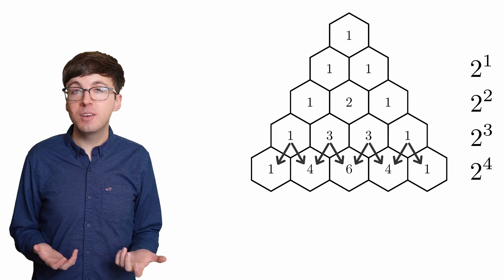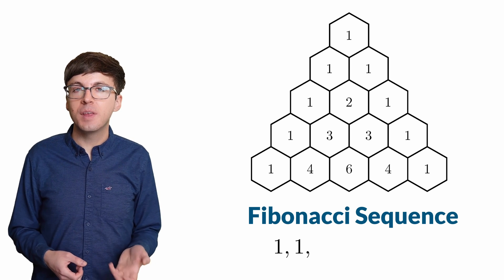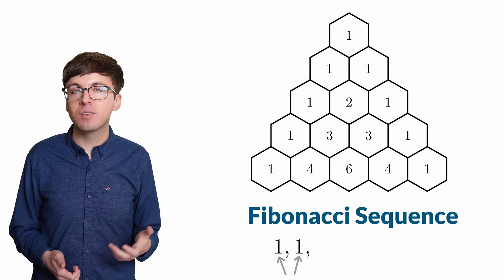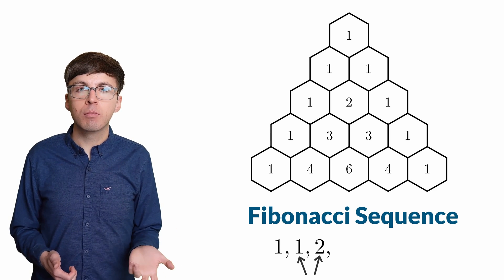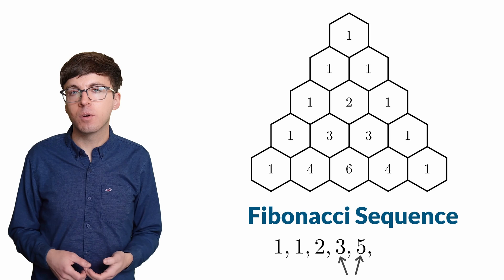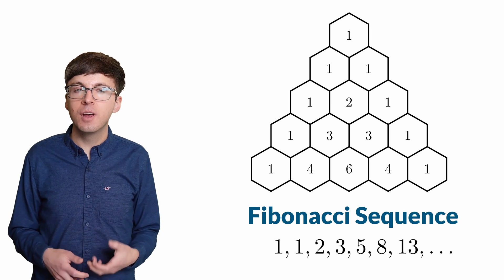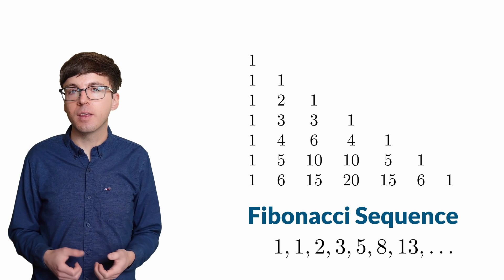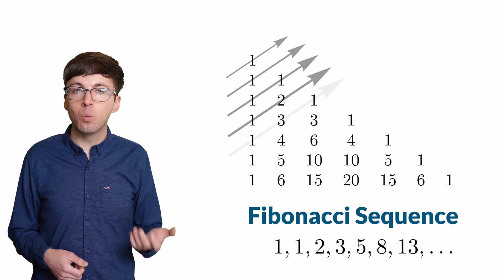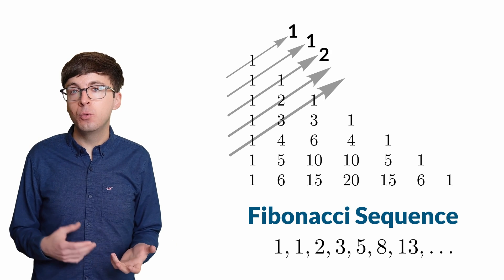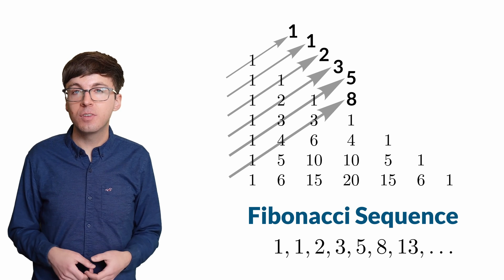The Fibonacci sequence also shows up. This is the famous sequence that starts with 1, 1, and then each following value is the sum of the previous two: 2, 3, 5, and so on. It's a little easier to see in Pascal's triangle if we left-align its values. Now we add up the values along the diagonals. We get 1, 1, 2, 3, 5, 8, and so on — it's the Fibonacci sequence.